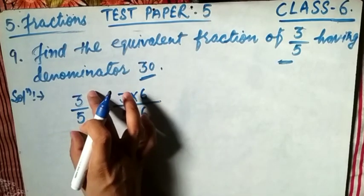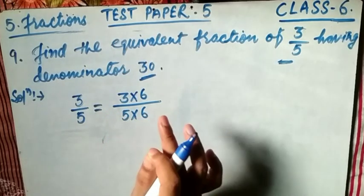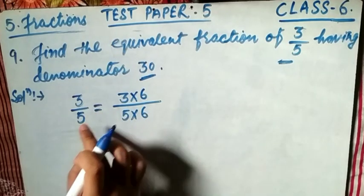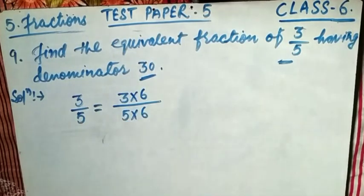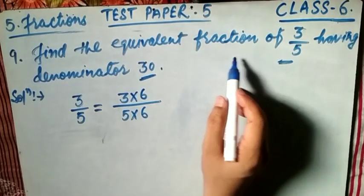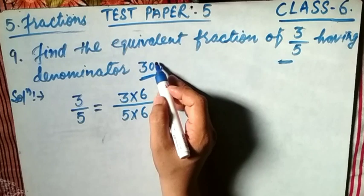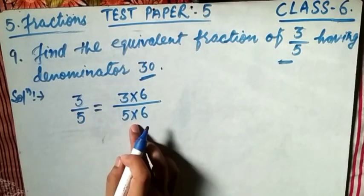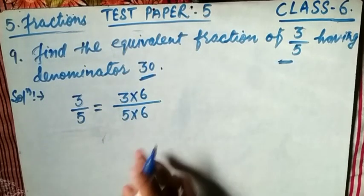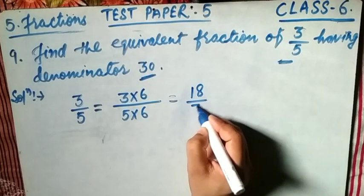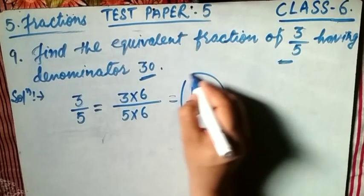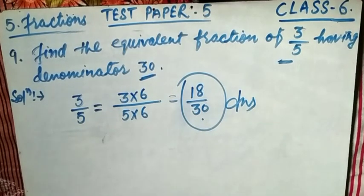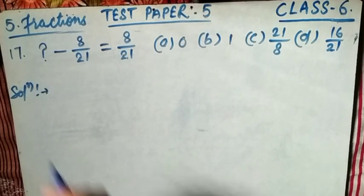Remember, for equivalent fractions, a non-zero number is multiplied by both the numerator and the denominator. So multiplying 3 by 6 gives 18, and 5 by 6 gives 30. The equivalent fraction with denominator 30 is 18/30. That is the answer. I hope you understand.